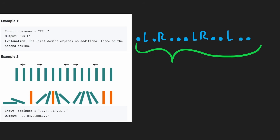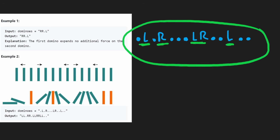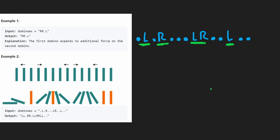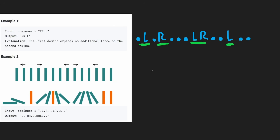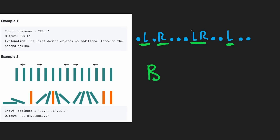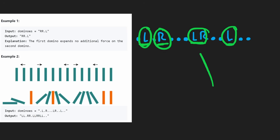The second example is a bit more interesting. One thing important to note: anything that starts out as L or R is always going to stay in that state. So we're trying to figure out the final return state. The ones already L or R are not going to change. What we have to figure out is what happens to the remaining dot dominoes — how are they going to change?